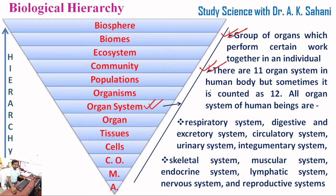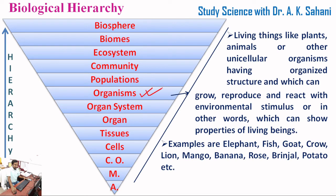There are 11 organ systems in the human body, but sometimes it is counted as 12. All organ systems of human beings are: respiratory system, digestive and excretory system, circulatory system, urinary system, integumentary system, skeletal system, muscular system, endocrine system, lymphatic system, nervous system, and reproductive system.